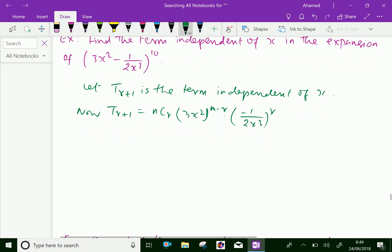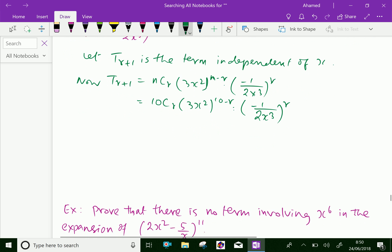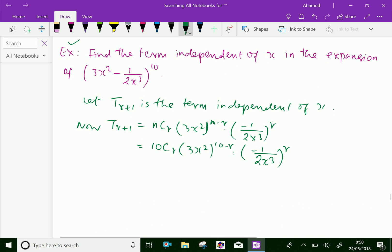Now, we will substitute the value of n, that is 10. That is 10Cr into (3x²)^(10-r) into (-1/(2x³))^r.